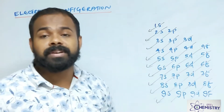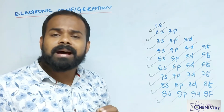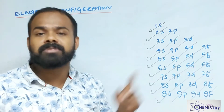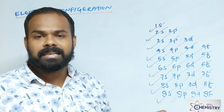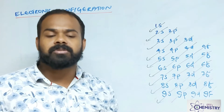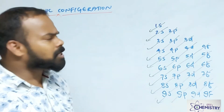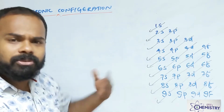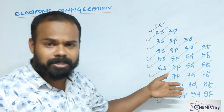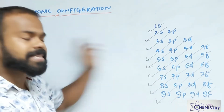What is the meaning of electronic configuration? Electronic configuration means it is a proper arrangement of electrons around the nucleus. How can we arrange the number of electrons properly and thoroughly — that is called electronic configuration. How to write that, we know by using this method.